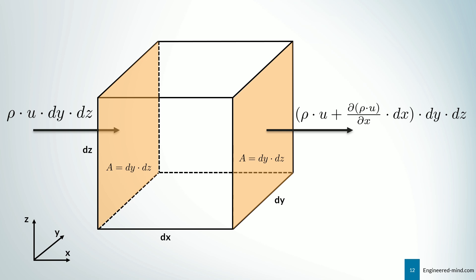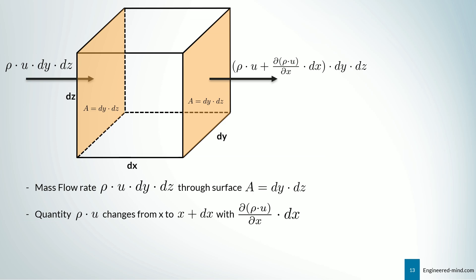For the moment, let's just focus on the x direction. On the left side, the mass flow going into our control volume is denoted by rho times u times dy times dz, where dy times dz is nothing else than the surface area. On the right side, you can see the same quantity but changing along dx. So we have the mass flow rate rho times u times dy times dz through the surface A, and the quantity rho times u changes from x to dx with rho times u plus the partial derivative term times dx. We just add the term that changes along dx to the equation.